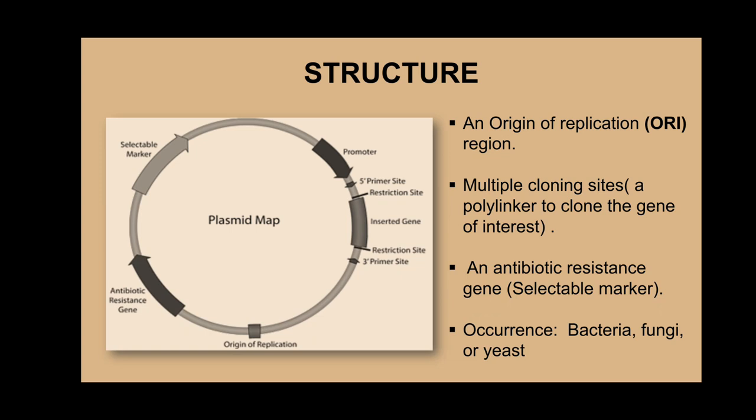Looking at the structure of a plasmid, here you can see a plasmid map showing three key parts. They have an origin of replication, a selectable marker gene, and a cloning site. The origin of replication indicates where DNA replication begins. The selectable marker gene distinguishes cells containing the plasmid from those that don't. The cloning site is where the foreign DNA is inserted.